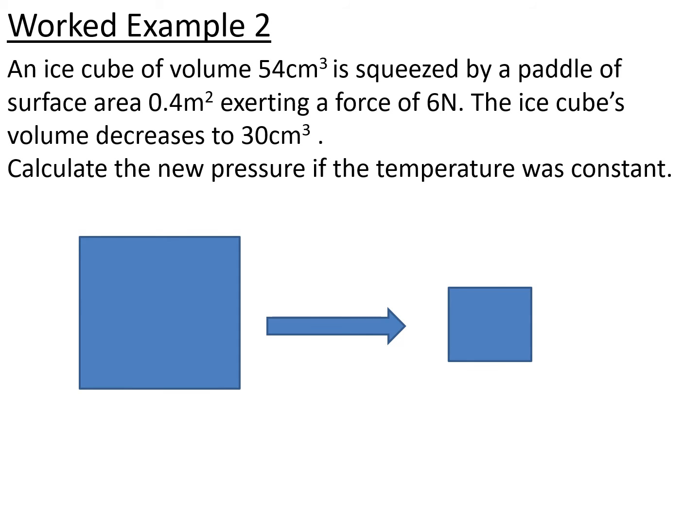How can they make it trickier for you? Well, let's look at this example. Again, feel free to pause this video and try this question yourself. An ice cube of volume 54 cm³ is squeezed by a paddle of surface area 0.4 m² exerting a force of 6 newtons. The ice cube's volume decreases to 30 cm³. Calculate the new pressure if the temperature was constant.